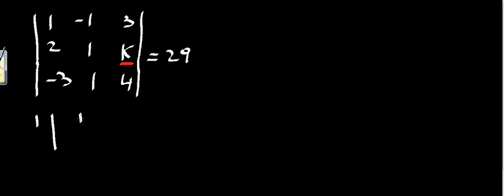So 1 times its minor, which is going to be 1k14, minus 1 here times its minor, which is going to be the determinant that we get with this column here: 2 minus 3, and these values here, k14.